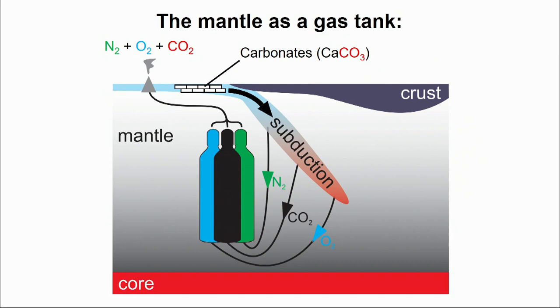One can think of a mantle as a huge gas tank. On Venus, its gas tank is wide open for CO2, and because the planet does not have plate tectonics, it's unable to put that CO2 back into the mantle.